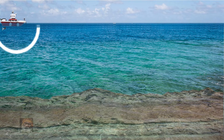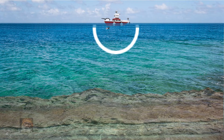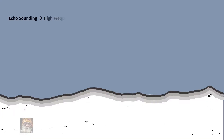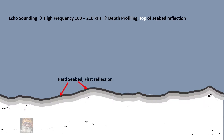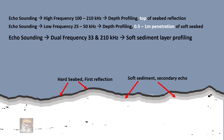A Single Beam Echosounder sends out a sound pulse which reflects back from the seabed. By calculating the time taken for two-way travel multiplied by sound velocity, we get depth. Normally a low frequency of 33 kHz to a high frequency of 210 kHz is used in this measurement. Low frequency travels further into the seabed, making it ideal to measure top sediment layers.